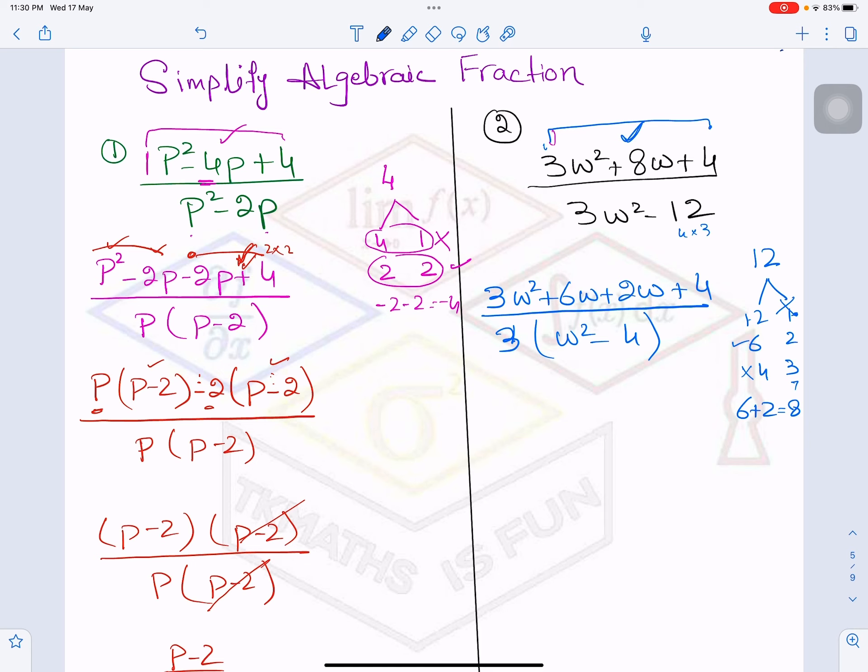So let's first of all factorize the numerator further. So from here I will see what is common and from here what is common. So 3W is common.